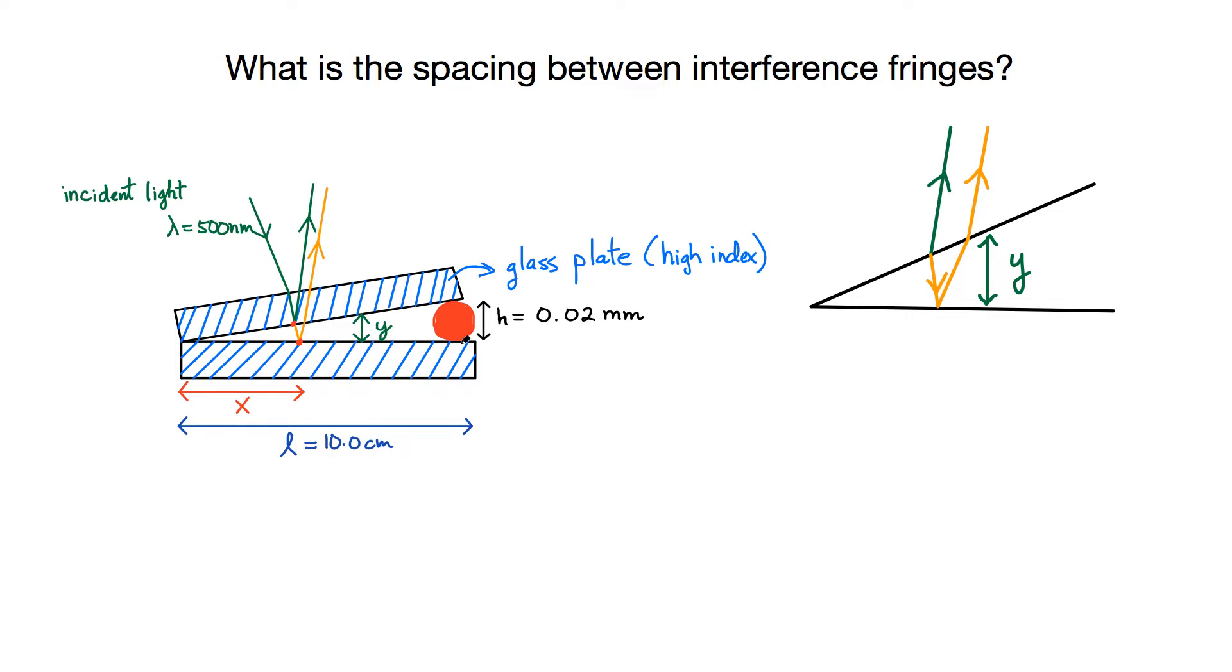So you know the length and the spacing here. And I'm going to consider some monochromatic incident light that has a wavelength of 500 nanometers. And let's look at the interference pattern.